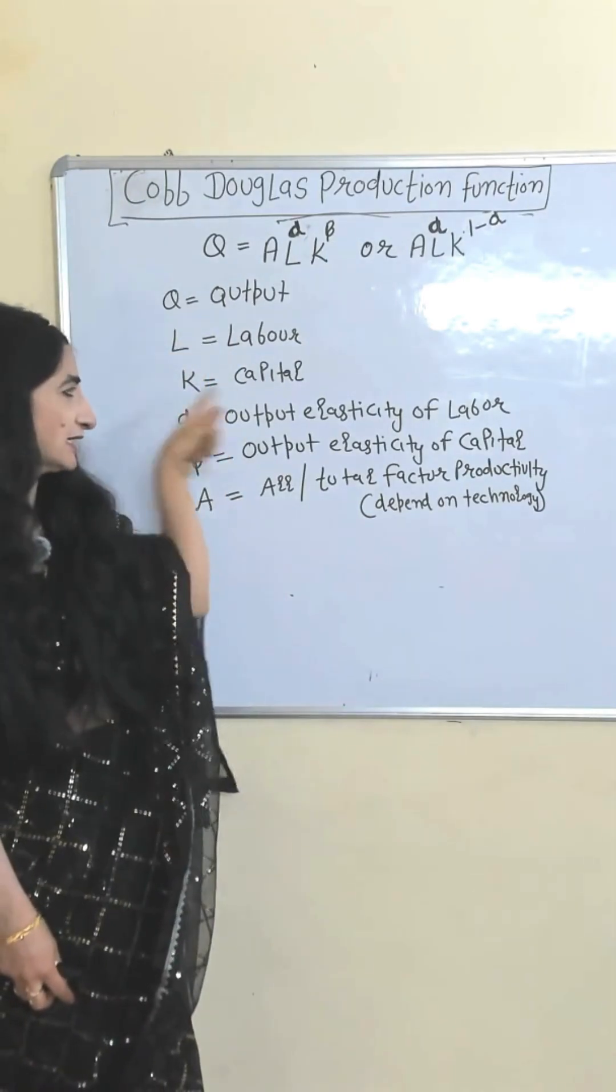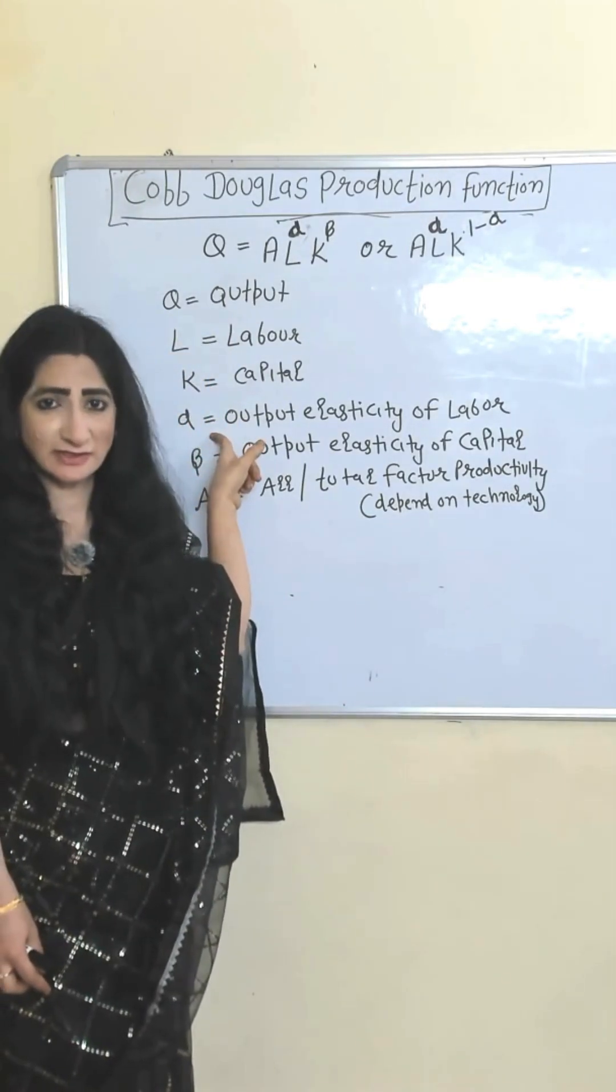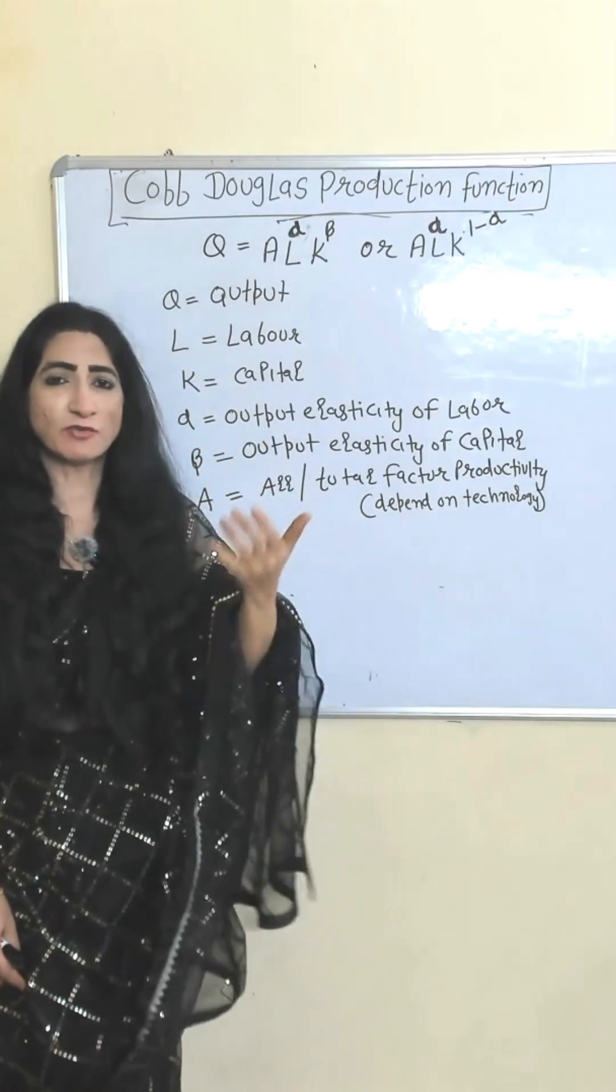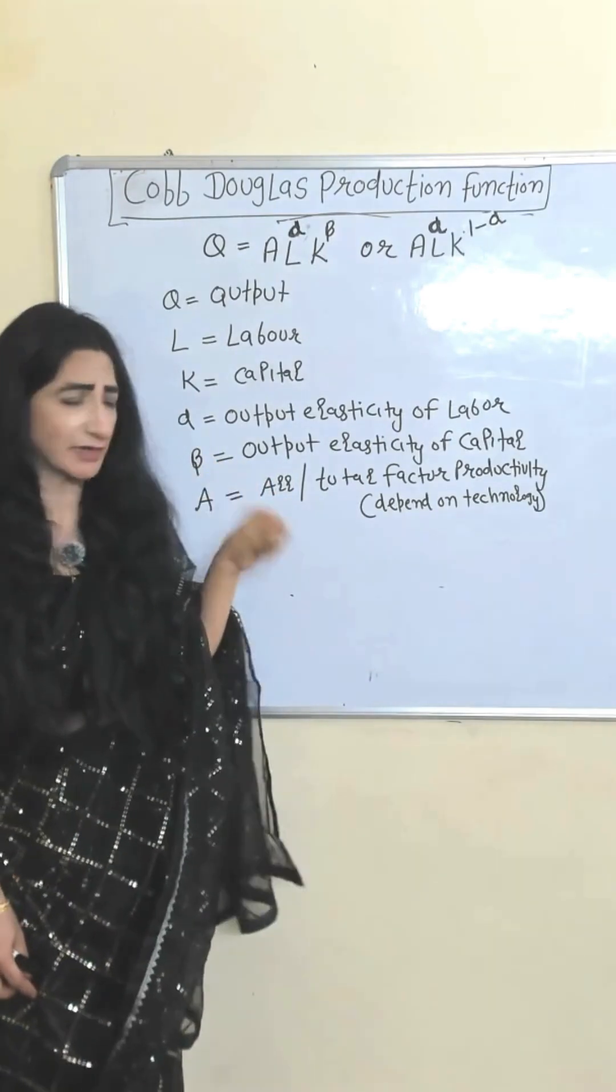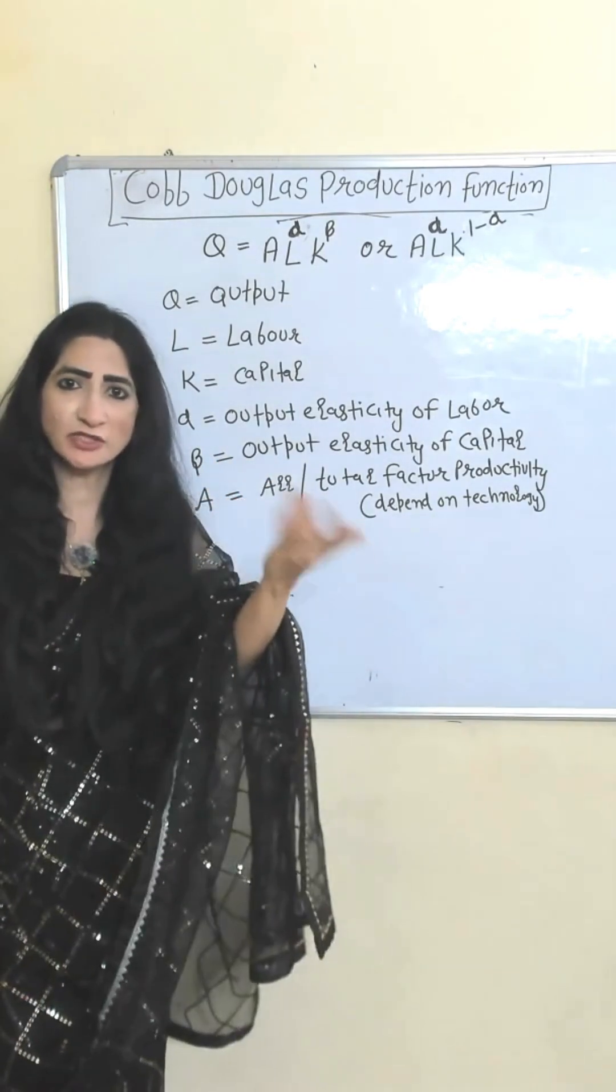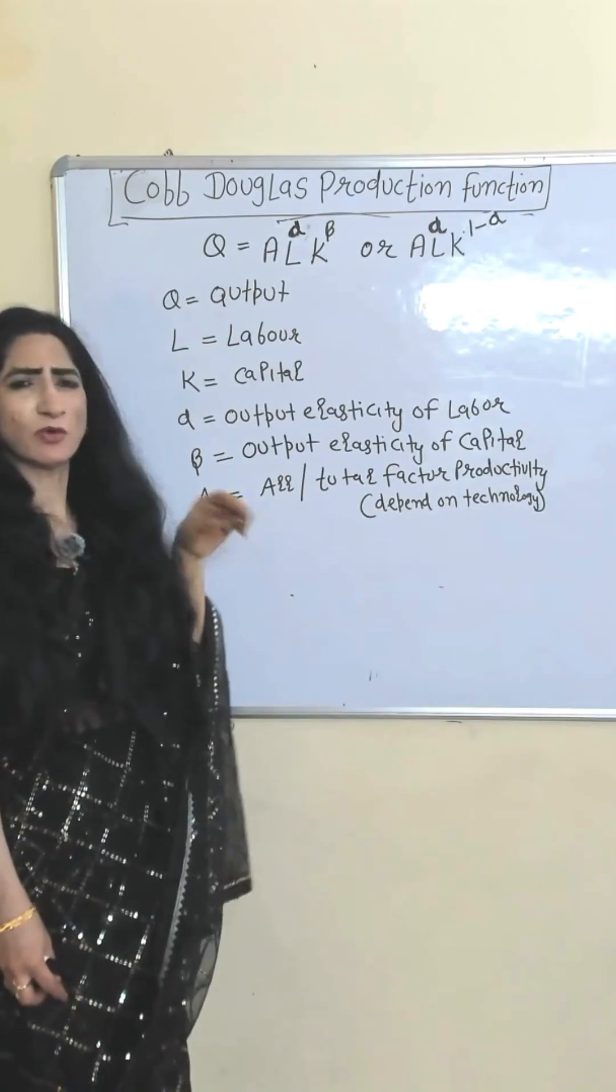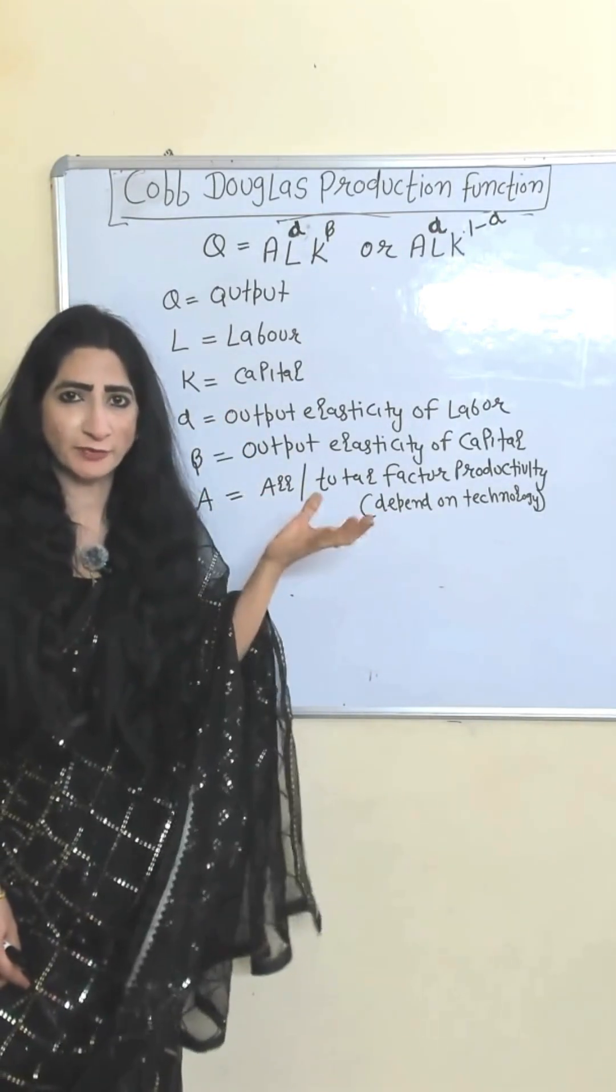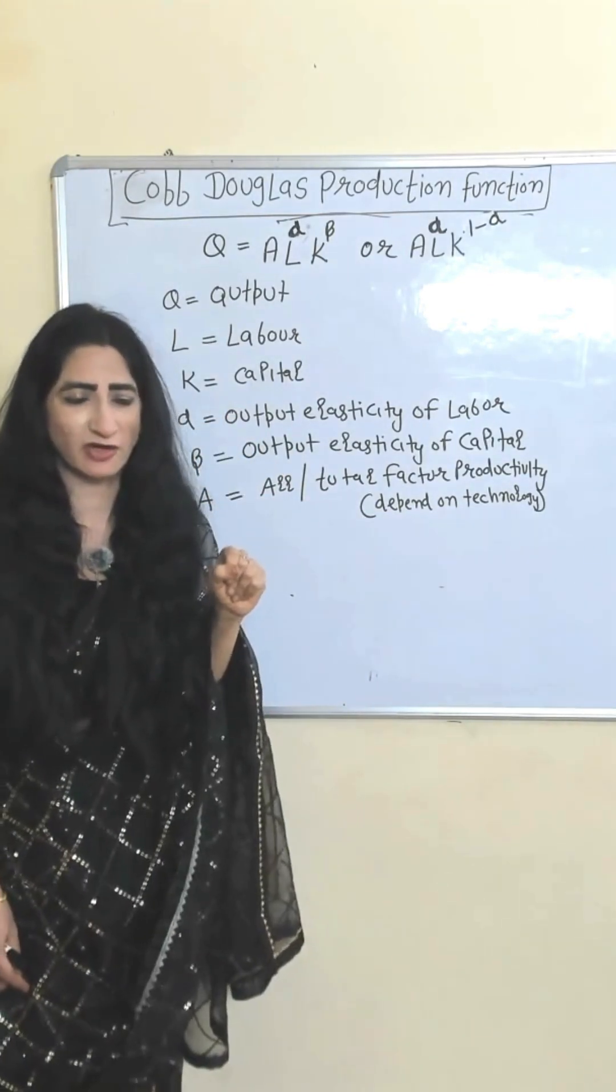Q output, L labor, K capital, alpha output elasticity of labor. That means how much output change due to change in labor. Beta represent output elasticity of capital. How much output change due to change in capital. A represent total factor productivity which mainly depend on technology.